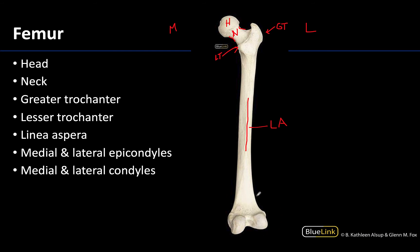Moving down to the distal end of the femur, you'll have the epicondyles and the condyles. Because the head is medial, this makes sense that this would be the medial condyle and this would be the medial epicondyle. The greater trochanter is always lateral, so this would be the lateral condyle and this would be the lateral epicondyle. The lateral and medial epicondyles will be attachment points for the collateral ligaments, and the condyles themselves are what are going to articulate with the tibial condyles to form the knee joint.